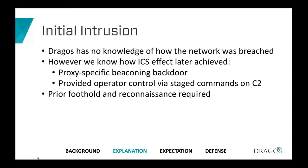For the initial intrusion, we have no knowledge of how the network was breached. We do know how the ICS effect was achieved. The backdoor has a proxy-specific beaconing mechanism — it was hard-coded with the address of the internal proxy server to route traffic to command and control servers. This implies a prior foothold and fairly extensive reconnaissance to map out the network and how communications could pass in and out of the ICS space.